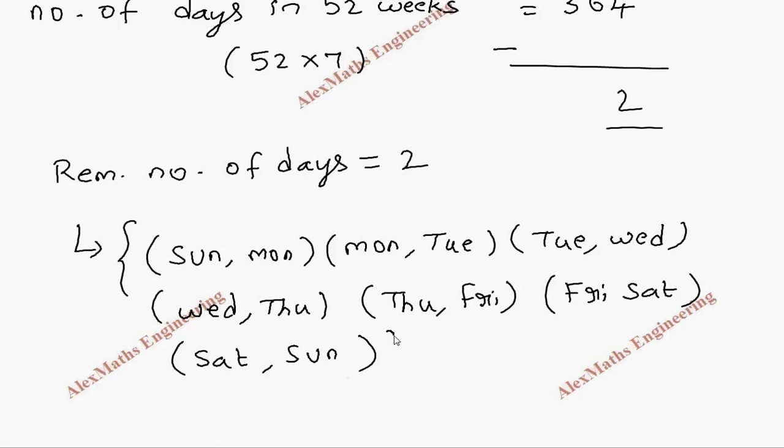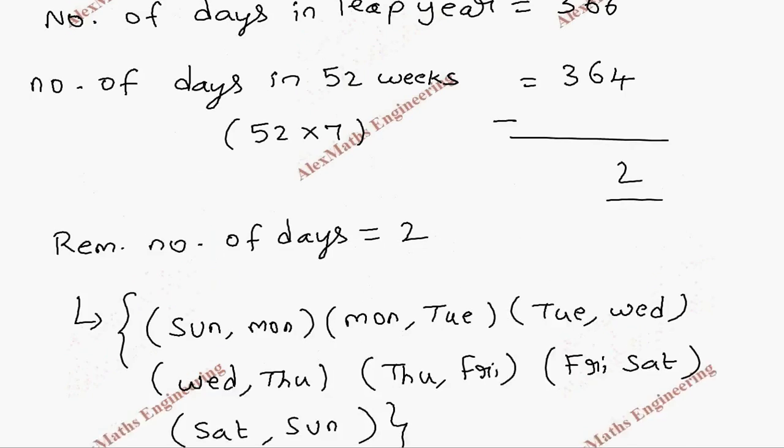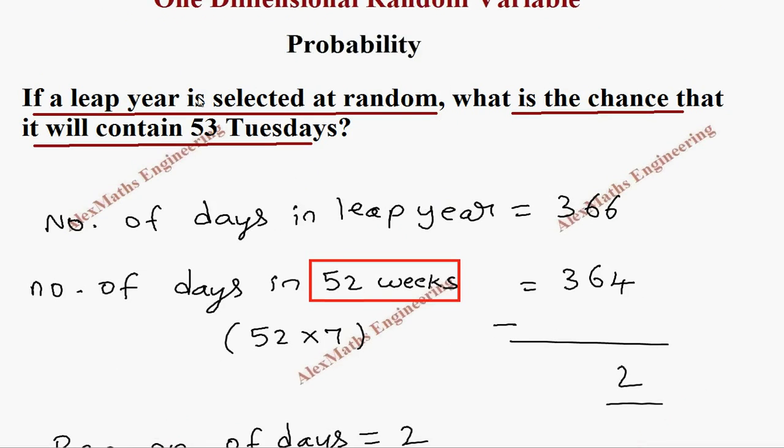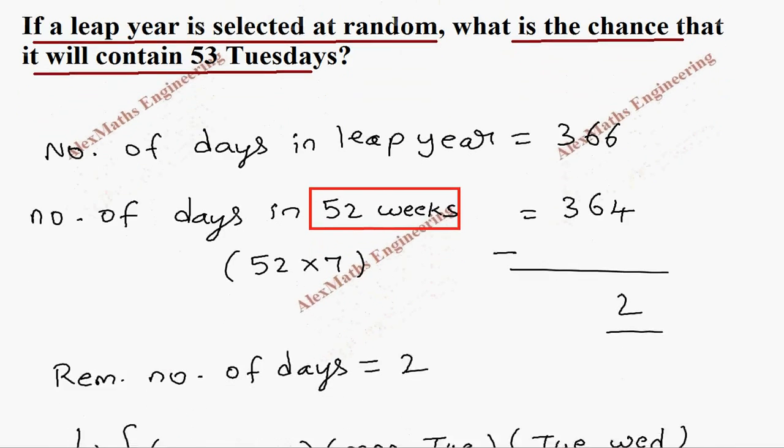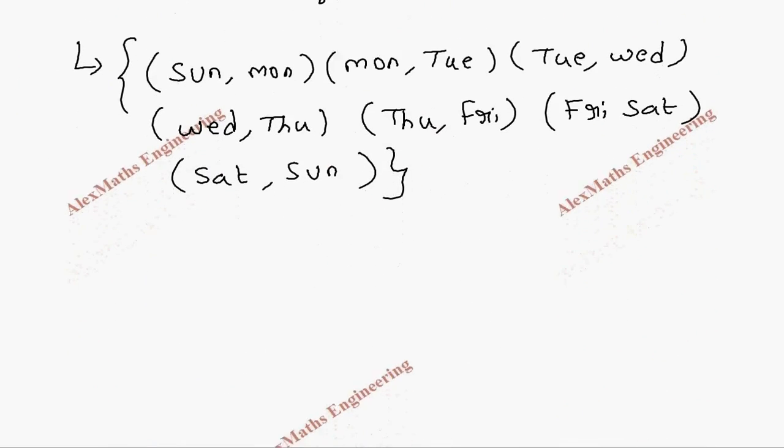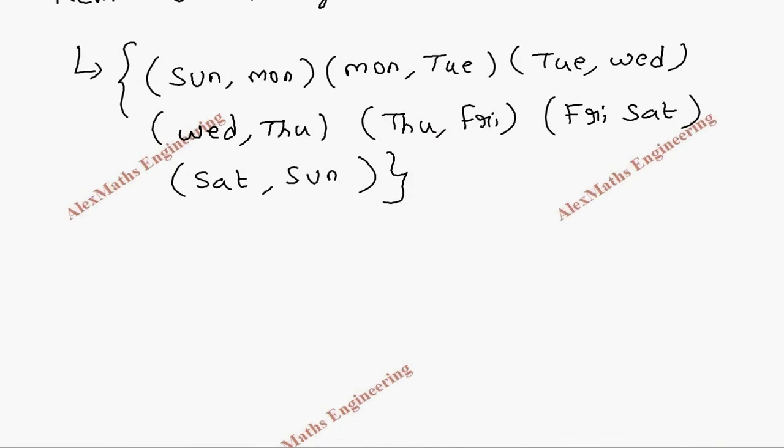Already in 52 weeks we get 52 Tuesdays. If we get one more Tuesday, then it will become 53 Tuesdays. From this sample space, if this or this combination occurs, we get Tuesday.